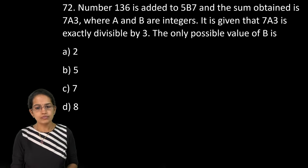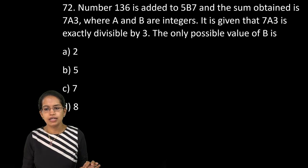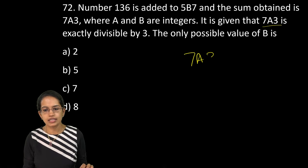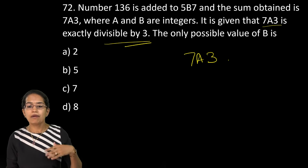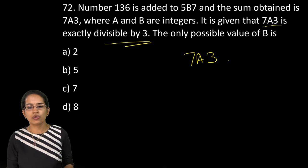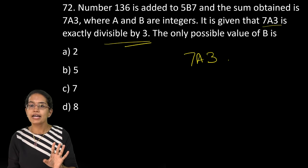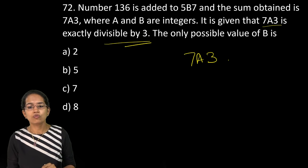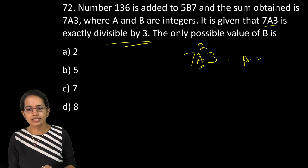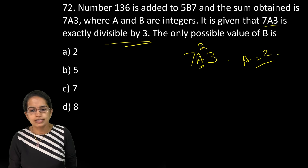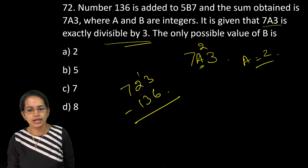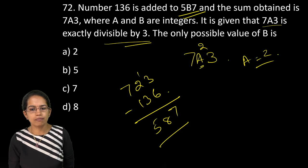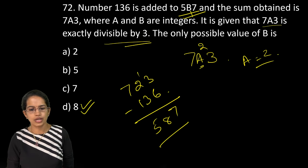The next is you have a number 7A3 which is exactly divisible by 3. Now 7 plus 3 is 10. I make the nearest number. Let's say 12. So 12, that means 12 is divisible by 3. So what would be this number? This number would be 2. So A is equal to 2. Now I subtract 723. I subtract 136. So what number I get is 7, 8 and 5. So that makes it this. So B becomes my 8. So 8 would be my answer.